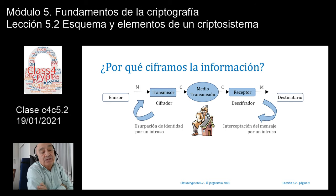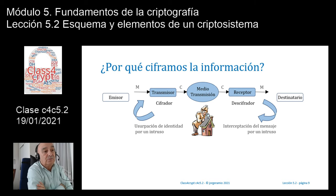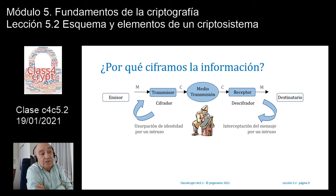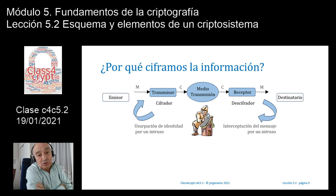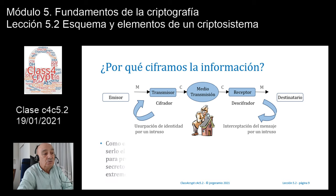Si nos fijamos en el extremo receptor, la interceptación del mensaje por un intruso no va a producir ningún tipo de daño, en tanto que será incapaz de descifrarlo, porque la información se cifra en el extremo emisor con una clave que solamente conoce el destinatario. Por el contrario, la usurpación de identidad por un intruso se evitará en tanto se utilice una clave en el extremo emisor que solamente conocen el emisor y el receptor, de modo que ningún intruso podrá usurpar la identidad ni cambiar el contenido del mensaje M.